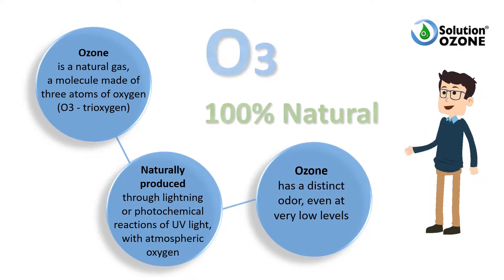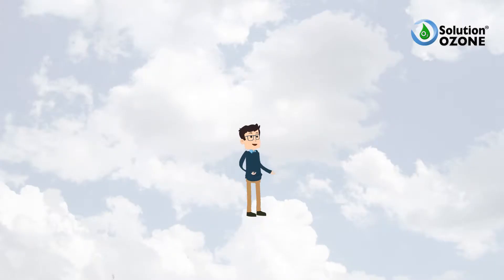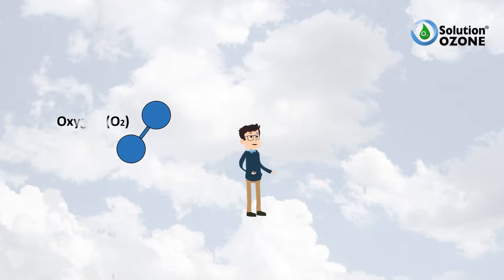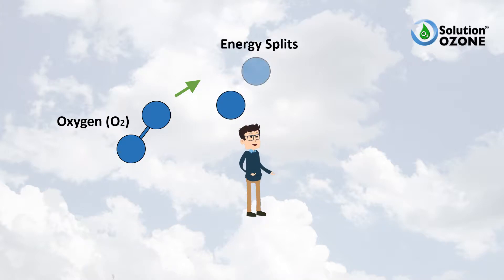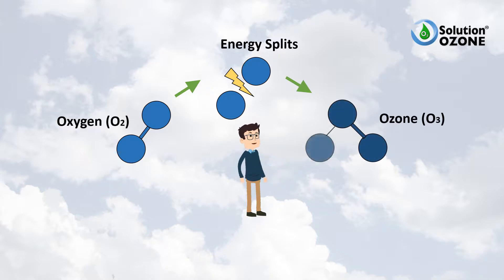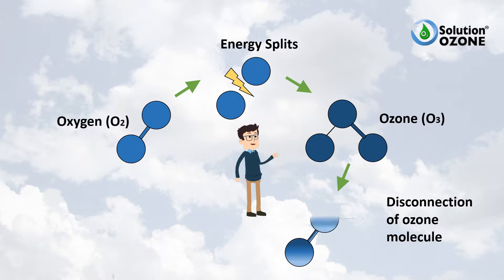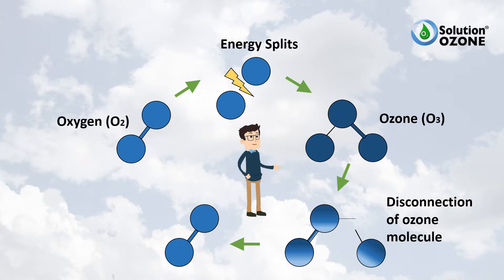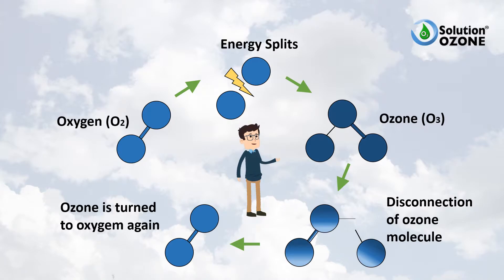Ozone is produced naturally in the upper atmosphere — the ozone layer — through ultraviolet radiation, and also through lightning with electrical excitation of oxygen molecules. Applied energy splits an oxygen molecule into atomic oxygen. The single atomic oxygen connects to an oxygen molecule and ozone is formed. The single atomic oxygen then disconnects from the ozone molecule, performs oxidation, and the ozone molecule turns back into an oxygen molecule, completing the cycle.